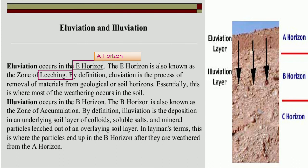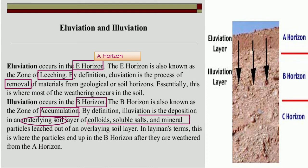Illuviation occurs in the B horizon, which is known as the zone of accumulation. Illuviation is the deposition in the underlying soil layer of colloids, soluble soil minerals, and particles washed out of the overlying soil layer.